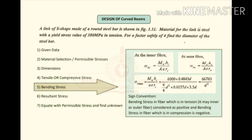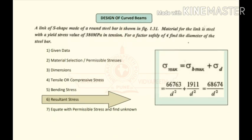Where there is tension the sign is positive, and where there is compression the sign is negative. The resultant stress is sigma_max = sigma_bending + sigma_direct (tensile or compressive). If the bending stress value is negative, the resultant stress is less; if positive, the resultant stress is more. We always consider the maximum, so we take the bending stress that is positive — which is the bending stress at the inner fiber, since at the inner fiber there is tension and at the outer fiber there is compression.